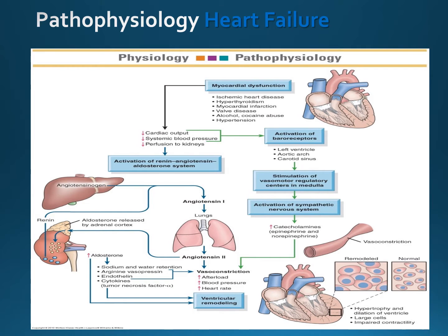When the heart begins to fail, mechanisms are activated to compensate for the impaired function to maintain the cardiac output. Systolic heart failure is the most common type resulting from an alteration in ventricular contraction, and it is characterized by a weakened heart muscle. Diastolic heart failure is characterized by a stiff and non-compliant heart muscle, making it difficult for the ventricles to fill.